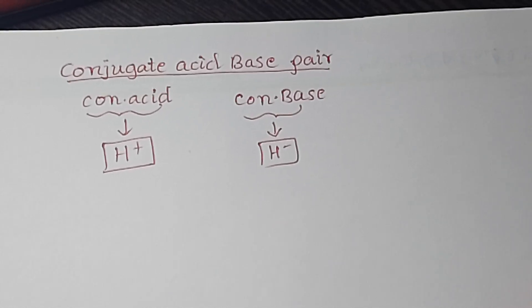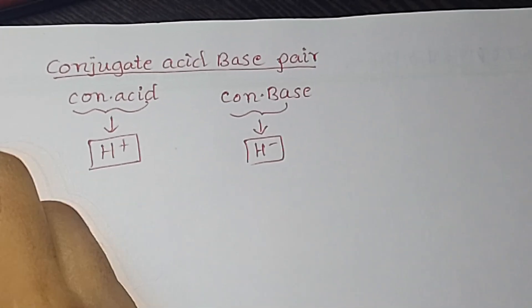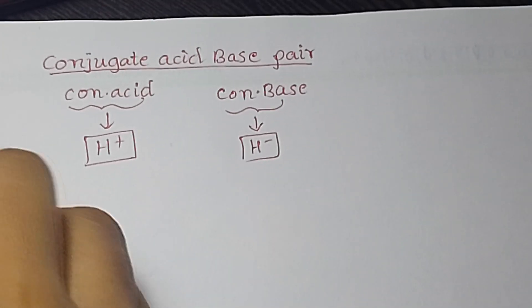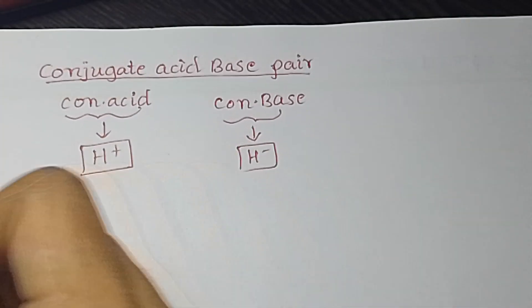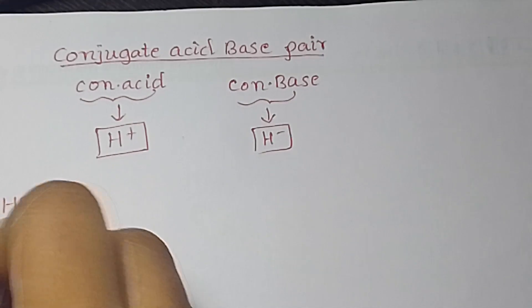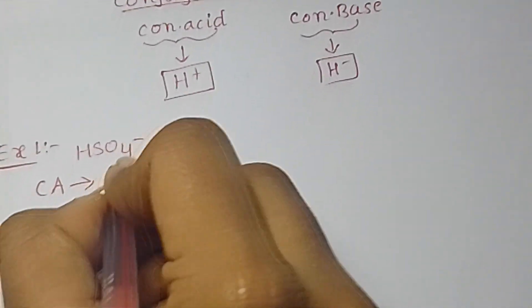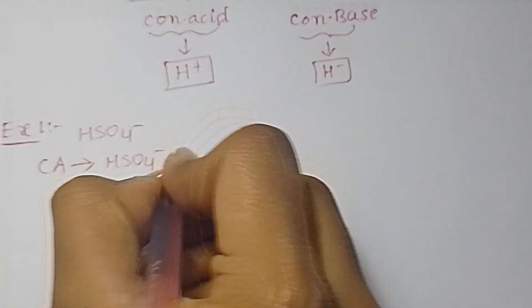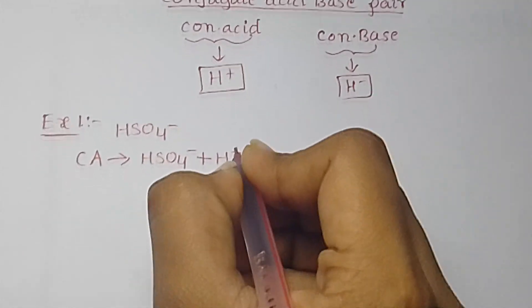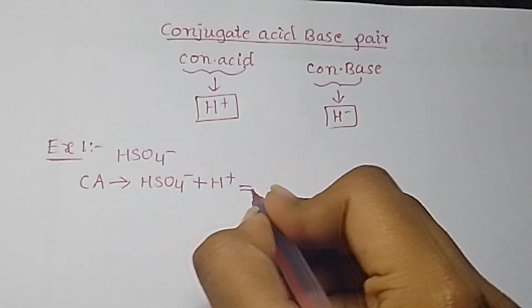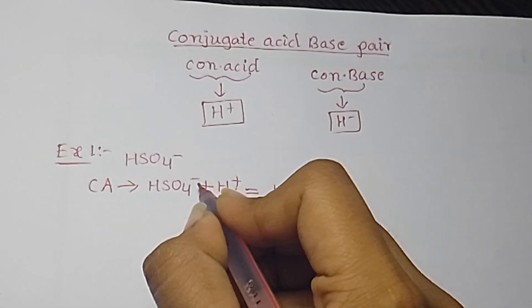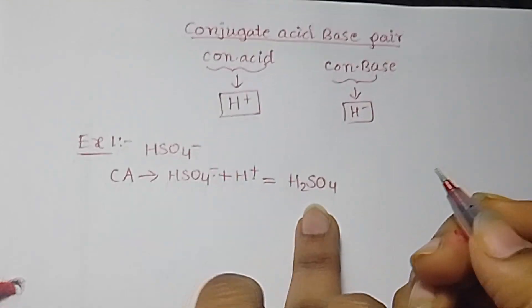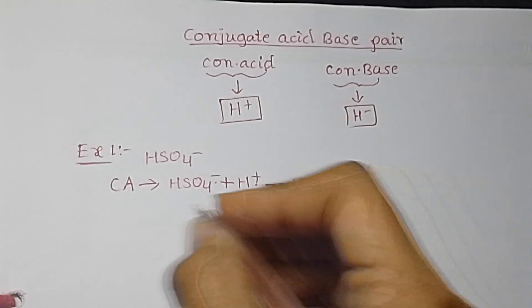Let us see some examples. Let us take example 1: HSO4 minus. So the conjugate acid of HSO4 minus is HSO4 minus plus H plus. The answer is H2SO4. See, there is a plus here, there is a minus here. Both get cancelled, and we get the answer H2SO4.